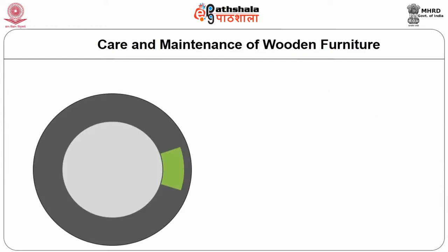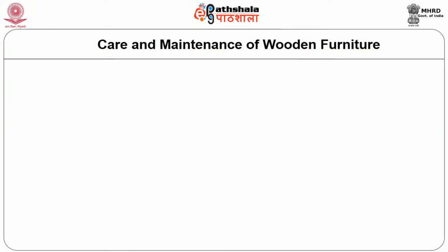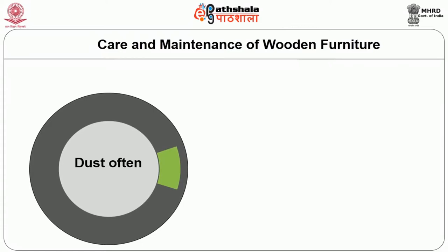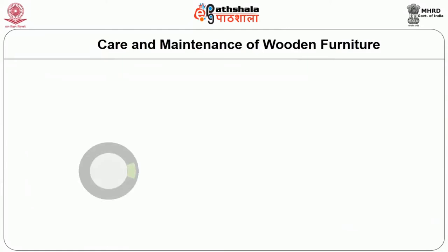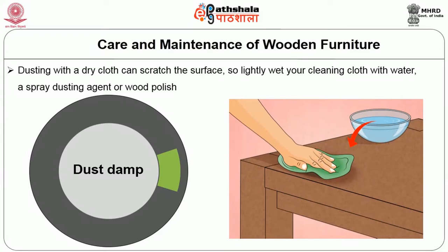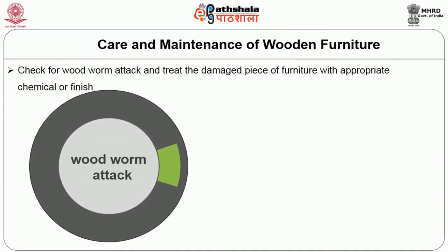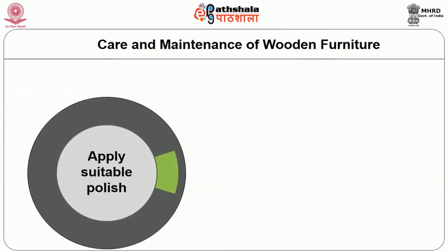Wipe all spills immediately because spills become stains after some time and are more difficult to remove. Dust the wooden furniture often — frequent dusting removes dirt before it has a chance to settle. Dust in a damp condition, as dusting with a dry cloth can scratch the surface. Lightly wet your cleaning cloth with water, a spray dusting agent, or wood polish. Check for woodworm attack and treat damaged pieces with appropriate chemical or wood finish.